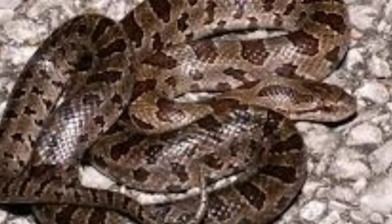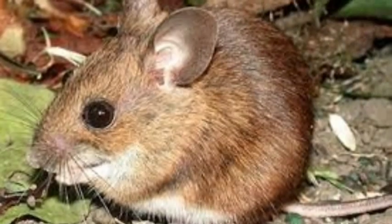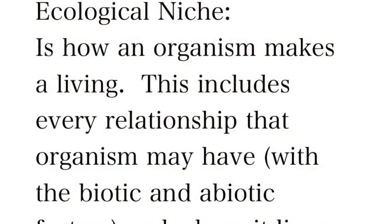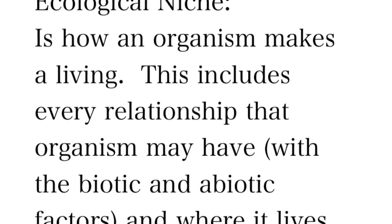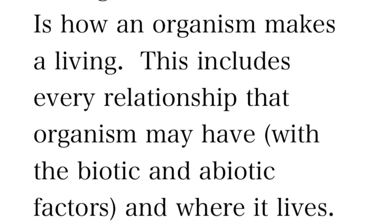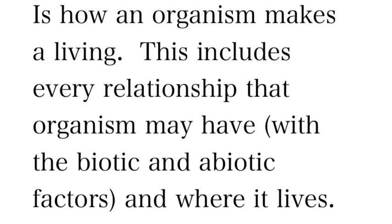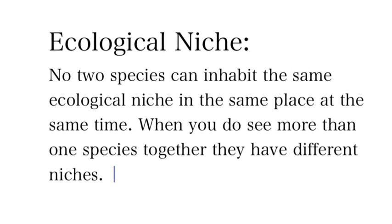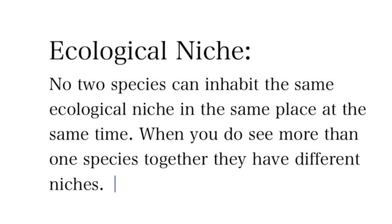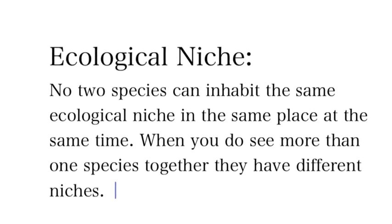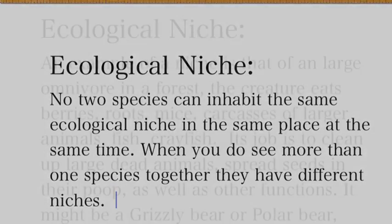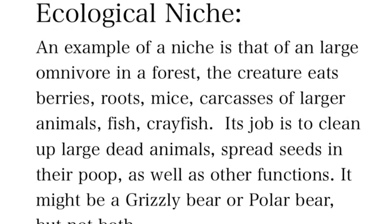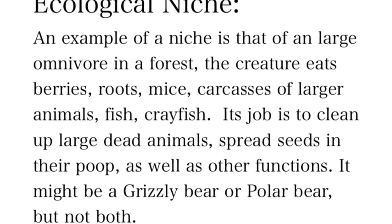Lots of different species might share a habitat — so a prairie chicken, a prairie kingsnake, and a field mouse all share the same habitat. But you cannot share the same niche. A habitat you can share; a niche you cannot. A niche is how an organism makes a living — it's all the interactions they carry out: the competition, what they eat, how they exchange air, everything about them. Only one species can occupy a niche, though more than one individual of that species can.